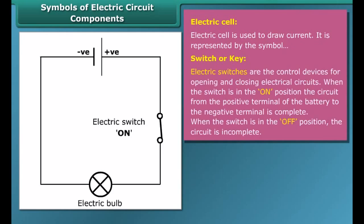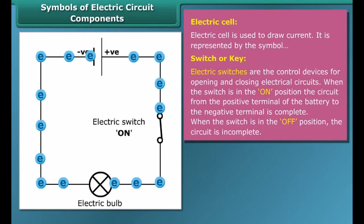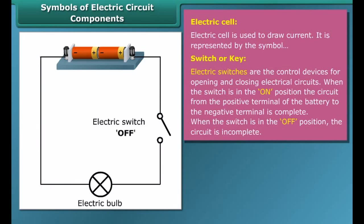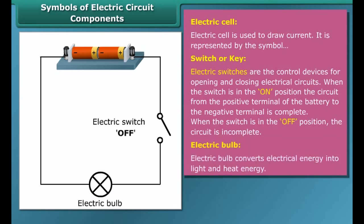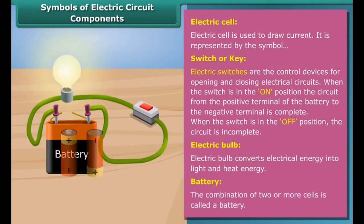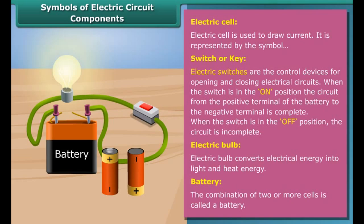A switch or key makes or breaks the connection in a circuit. When the switch is in the on position, the circuit is closed and the current flows throughout the circuit. When the switch is in the off position, the circuit is open and no current flows through the circuit. The combination of two or more cells is called a battery. In a battery, the positive terminal of one cell is connected to the negative terminal of the next cell.